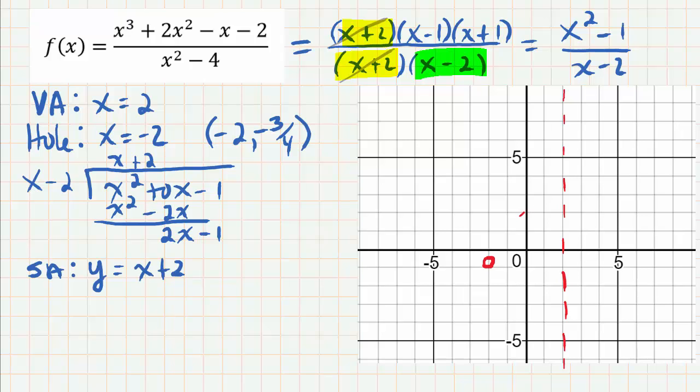Our slanted asymptote is y equals x plus 2. So let's go ahead and graph that - that's a line. The y-intercept is 2 and the slope is 1, so it's going to go right through those boxes, slope of 1.